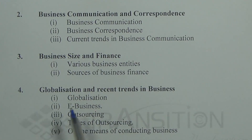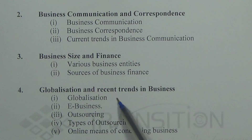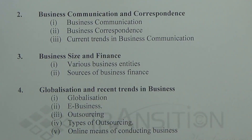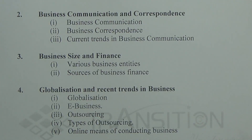Chapter 4 is Globalization and Recent Trends in Business, which has five topics: first, globalization; second, e-business; third, outsourcing; fourth, types of outsourcing; and fifth, online means of conducting business. This chapter covers important aspects of today's business world — globalization, e-business, and outsourcing — making it a very important chapter.